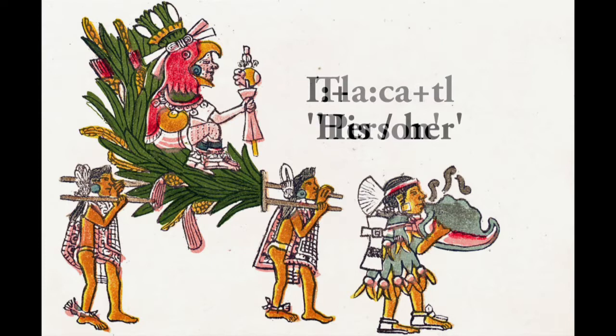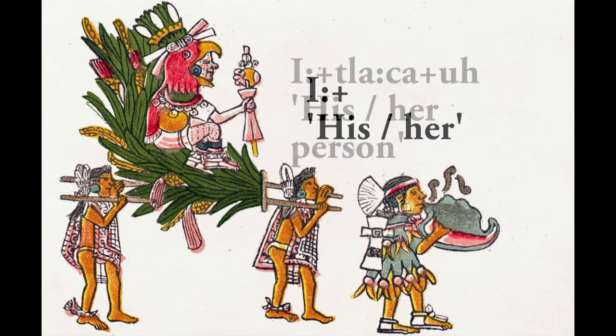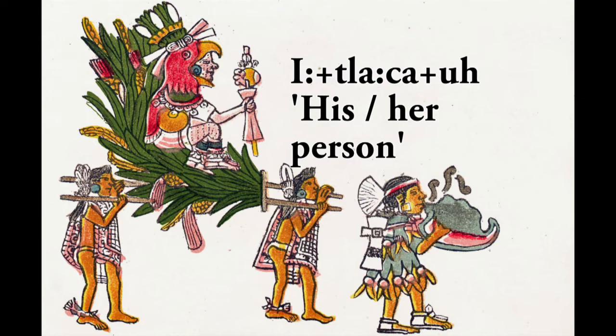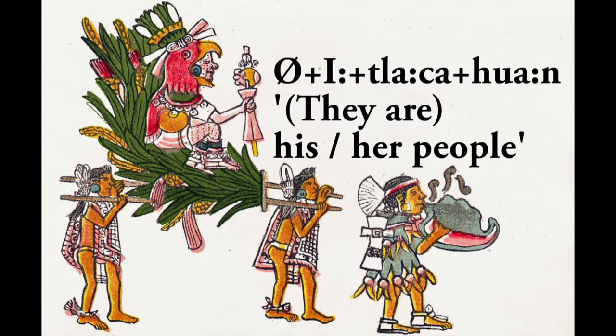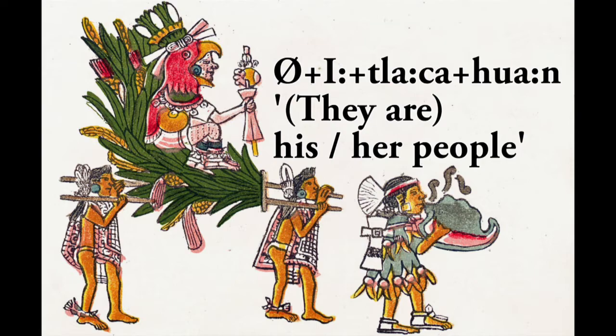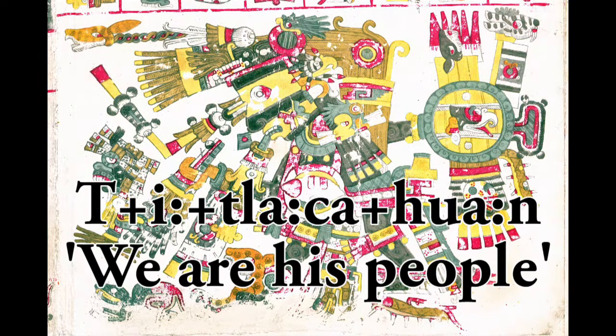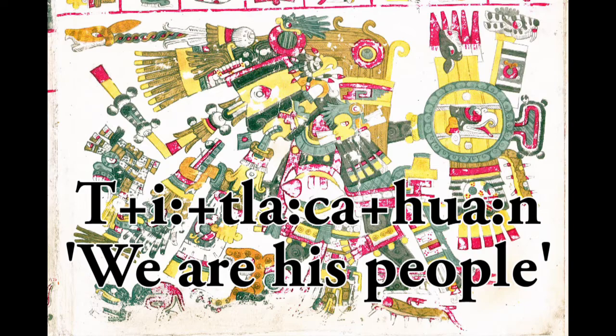Let's return to the noun tlakatl, which means man or person. His or her person adds the i- prefix to mark third person singular genitive, and the noun root — which ends in a vowel — replaces the tl suffix with -w: i-takaw. To say his or her people, we change the suffix from -w to -wan to show that the noun is plural. This entire word can be said as a full sentence since the third person subject prefix is null. Other plural subject prefixes can replace it, such as t- for the first person plural (we), forming tlakawan — we are his people — one of the most important nicknames of the god Tezcatlipoca.